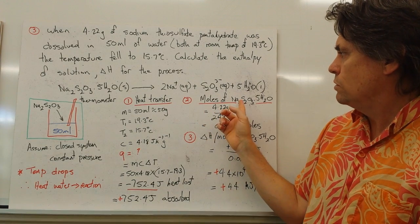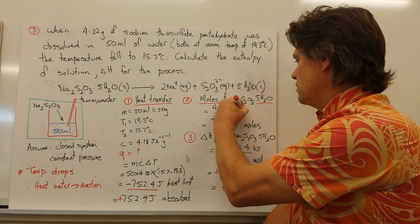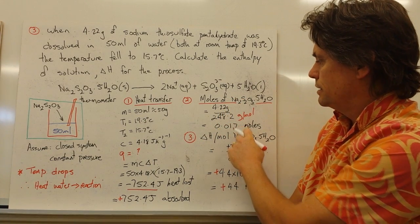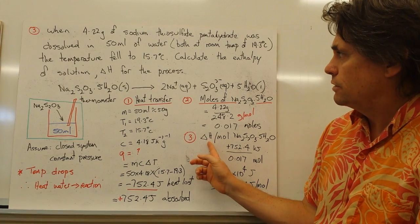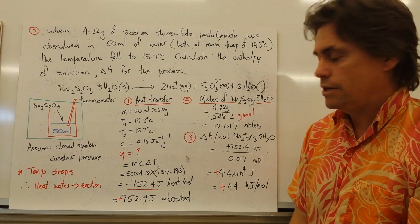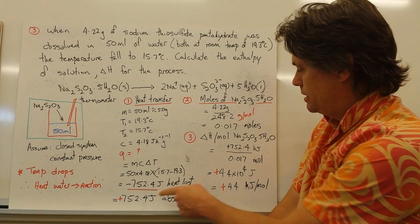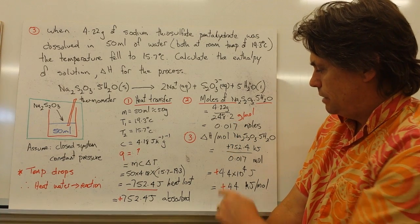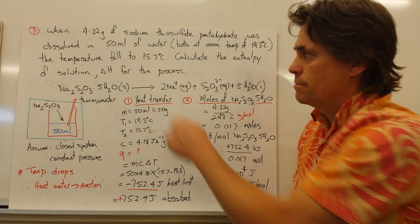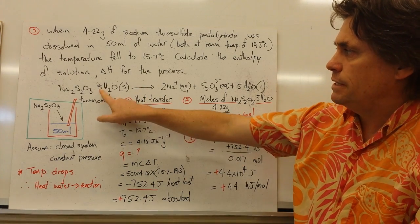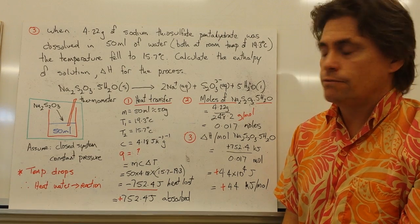The second step we need to do is determine the number of moles of sodium thiosulfate pentahydrate. 4.22 grams over 248.2 grams per mole, which gives us 0.017 moles of sodium thiosulfate pentahydrate. And our last step is to determine the delta H value per mole of sodium thiosulfate pentahydrate. In this case, we take our heat that's been absorbed by sodium thiosulfate pentahydrate, divide it by the number of moles that we determined were in the system, and we get a value of plus 4.4 by 10 to the fourth joules, or 44 kilojoules per mole of sodium thiosulfate pentahydrate. So for every mole of this that we put into water, we will need 44 kilojoules of heat for the process to occur.